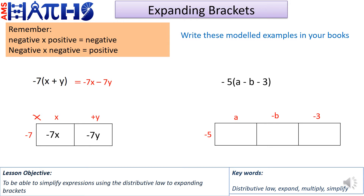We need to multiply minus 5 by a, by minus b, and by minus 3. Minus 5 times positive a: negative times positive is negative, so we get minus 5a. Then minus 5 times minus b: negative times negative is positive, so we get positive 5b. Then negative 5 times negative 3 is positive 15. So our answer is minus 5a plus 5b plus 15.